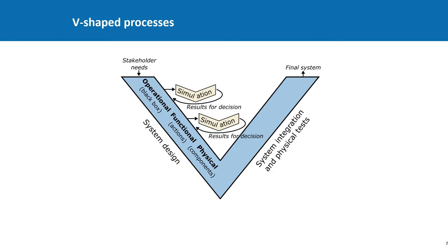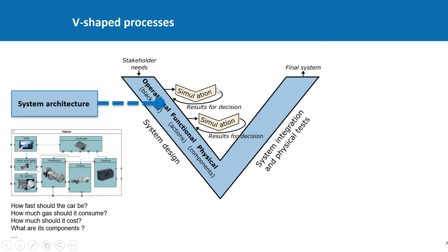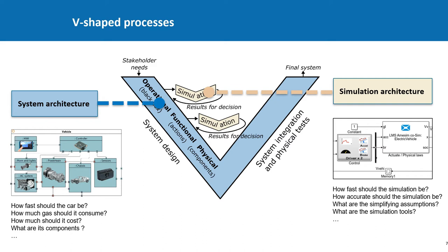This is the same idea but with V-models. This V-model in blue represents the development of a system — the system is first designed and then integrated and tested. The development of the system raises many questions answered by simulations. The development of simulation has its own V-model. In the system V-model, the definitions of requirements form a system architecture — it says how fast the car should be, for example. In the simulation V-model, the definitions of requirements form a simulation architecture — it says how fast the execution of the simulation should be.